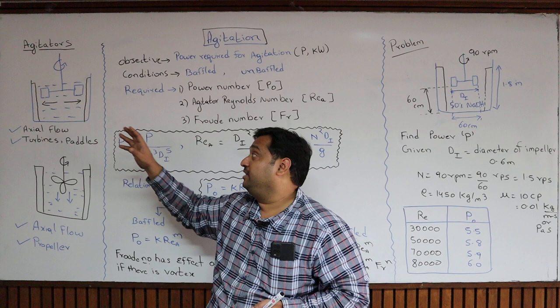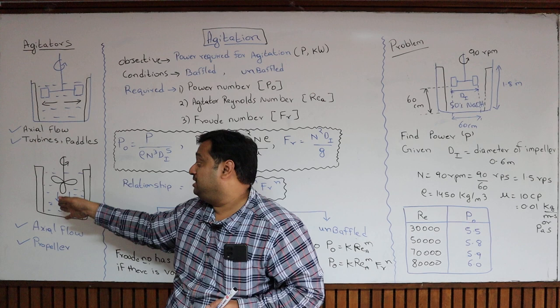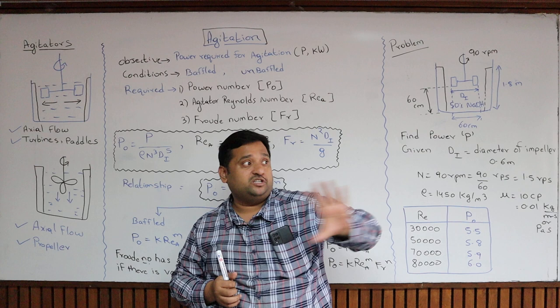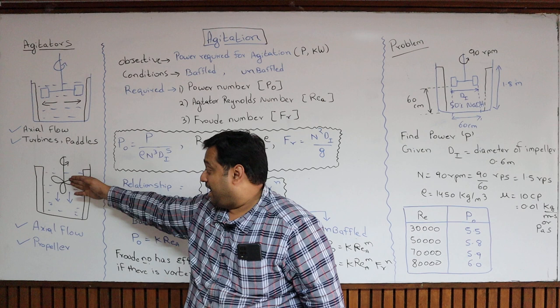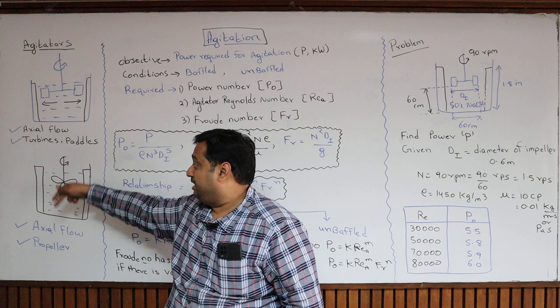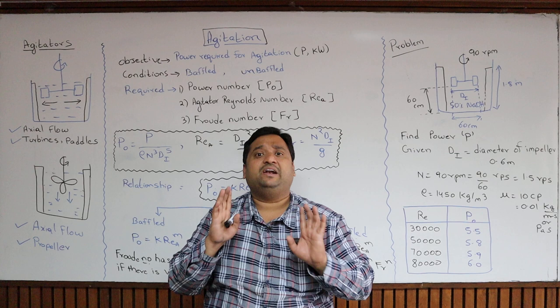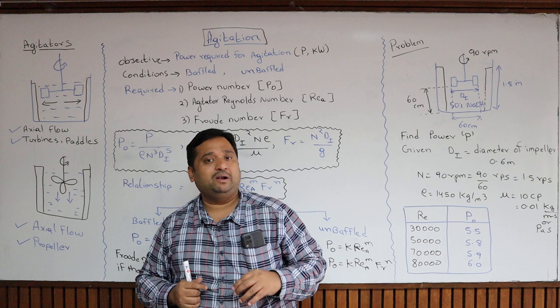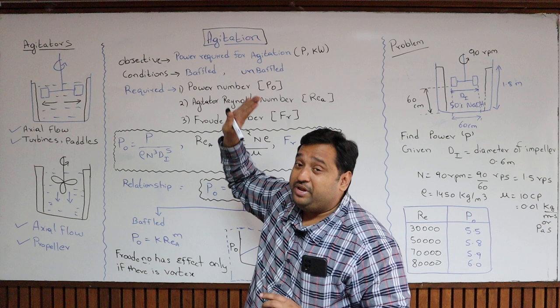Another kind of agitator is called a propeller, which pushes liquid downward — this is axial flow. Imagine a submarine moving under the sea: it pushes liquid backwards and moves forward. Similarly, axial flow propellers push liquid from top to bottom. In broad categories, propellers can have three, four, or eight blades, and turbines can be four, five, or six blade, depending upon the requirement.